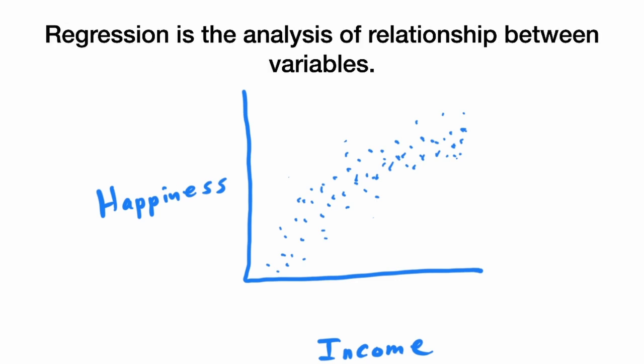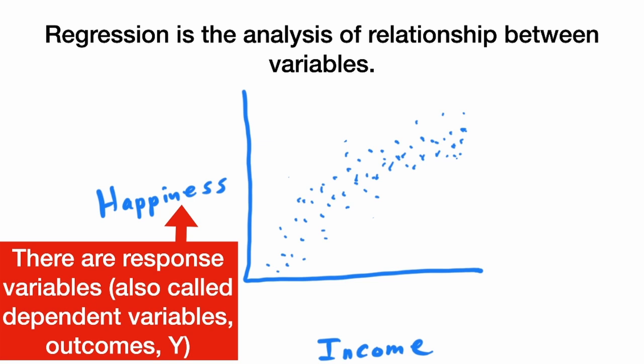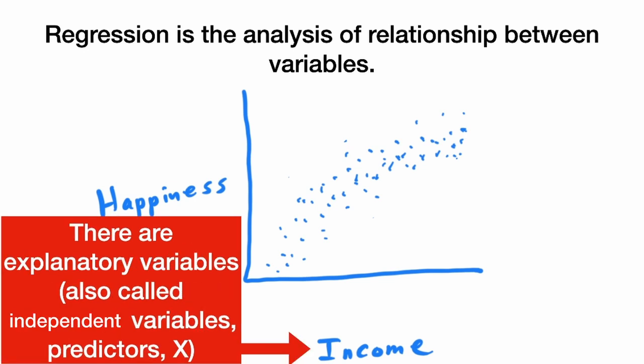Regression is the analysis of the relationship between variables. There are response variables, also called dependent variables, the outcomes, or the y variable, and there are explanatory variables, also called predictors, or x variables.